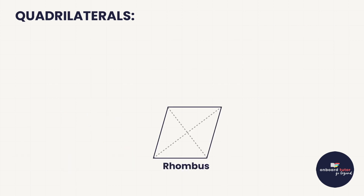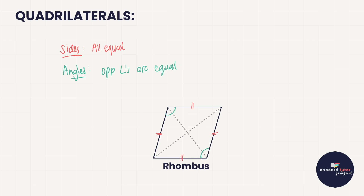Let's take a look at a rhombus. The sides of a rhombus are all equal — it's like a squashed-over square, so all four sides are equal. Then the angles: this is kind of like a parallelogram meets a square, because the opposite angles are equal. That one and that one are equal, and that one is equal to the one opposite it.